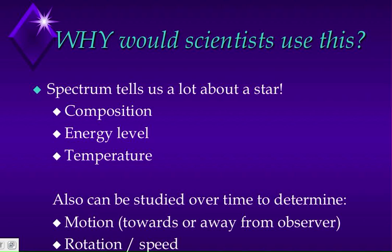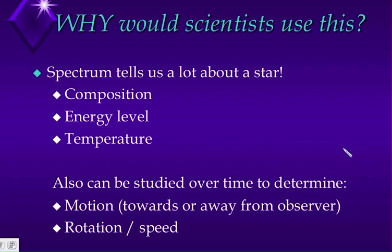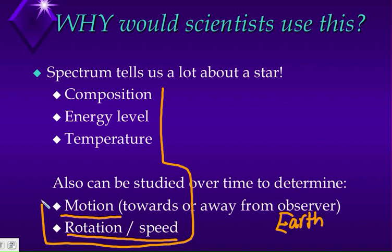A couple other things that spectrum can tell us about, not only composition, energy level, and temperature, but I can also compare spectrums from year to year and star to star and actually determine, hey, is the star moving towards or away from the observer or specifically from Earth or telescope? And I can also know the rotation of it, which way is it going, and what is the speed of its rotation. I know there's not a spot specifically for these in your notes, but just on the margin or something, jot these couple things down. These are all different uses for a star spectrum, composition being the most common.